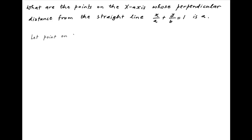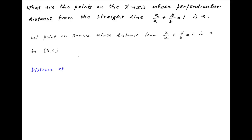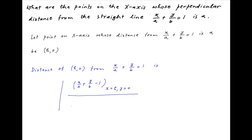Let the desired point on the x-axis whose distance from the given straight line x upon a plus y upon b equals 1 have the coordinates (h, 0). The perpendicular distance from (h, 0) on the given line is equal to the absolute value of x upon a plus y upon b minus 1, where x equals h and y equals 0, divided by the square root of the sum of the squares of the coefficients of x and y in the equation of the given line.